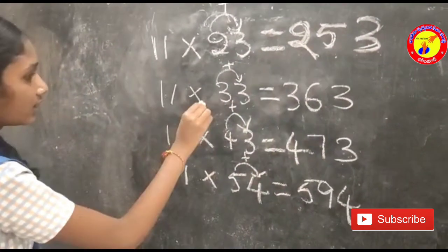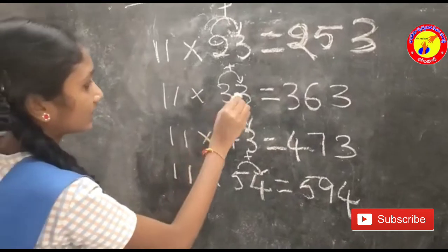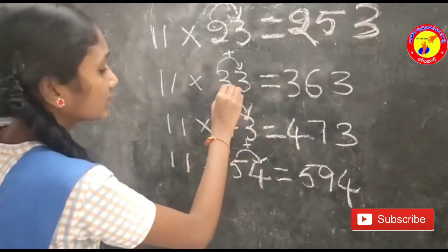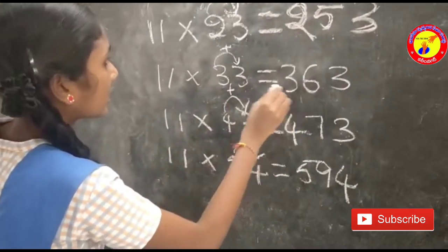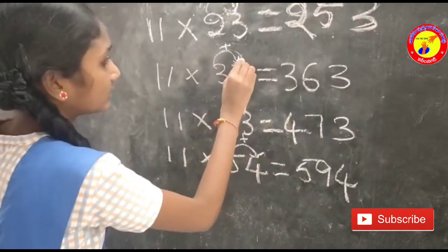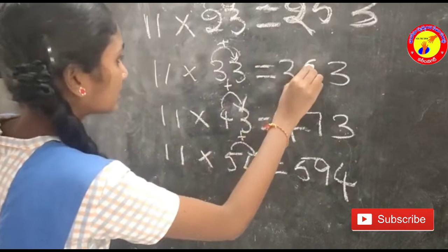11 into 33 is equal to: this 3 is here, 3 plus 3 is 6, and this 3 is here. So the answer is 363.